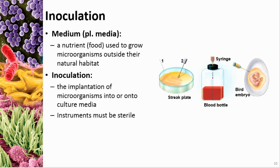When you inoculate something, you need to make sure your instruments are sterile. In the virtual lab, we'll talk about sterilization techniques — you actually heat that inoculating loop up to white hot, which kills anything living on it. Then you dip it into your sample and streak it across a plate. Things like loops, swabs, pipettes, and needles all have to be sterile.